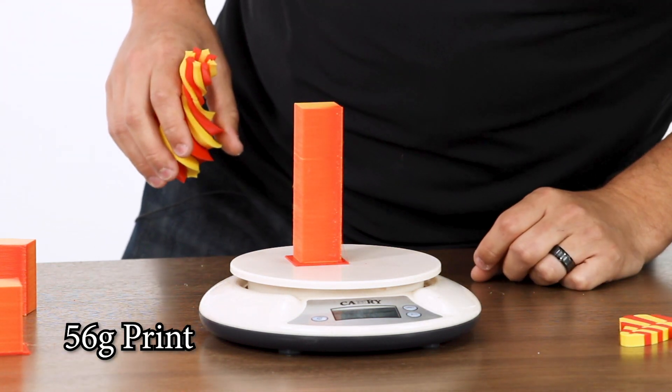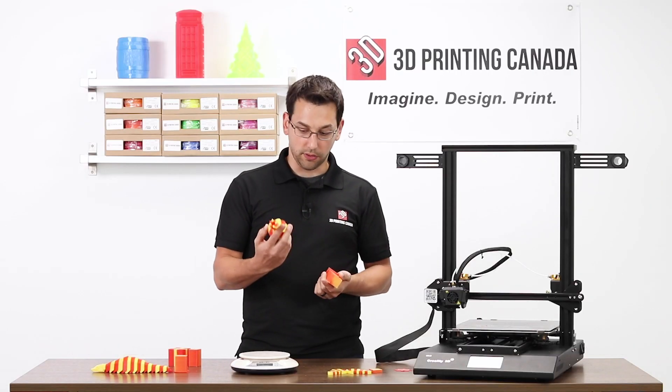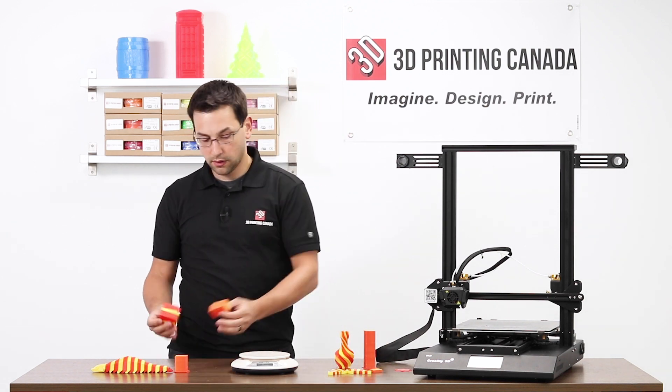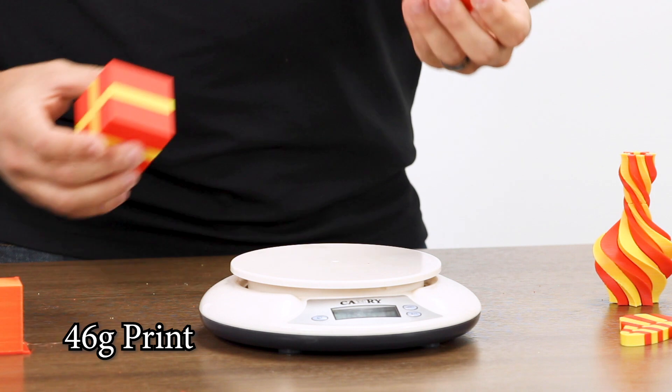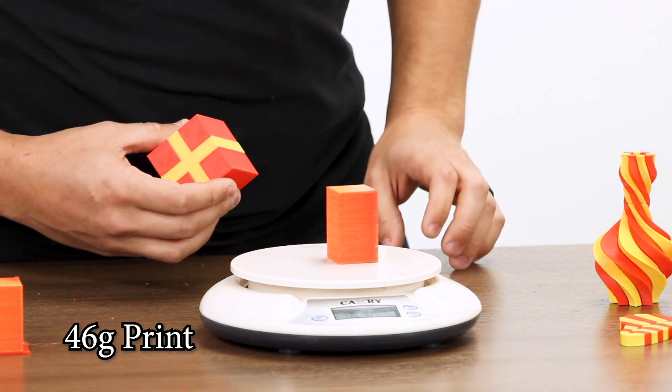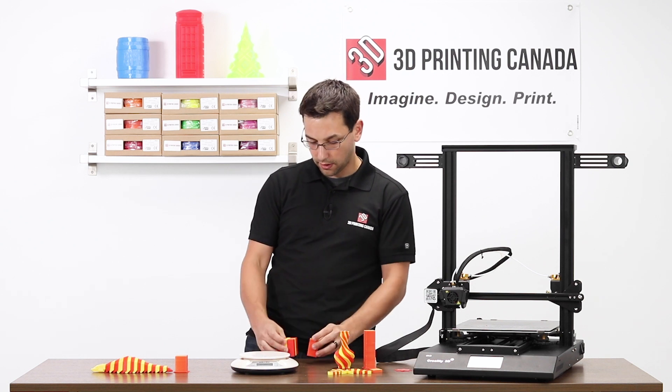And the purge is 106 grams. So it's almost double what the object itself used in filament. The package, we're at 46 grams. And then the purge for the package is 48. So they're basically equal as I kind of thought they were.